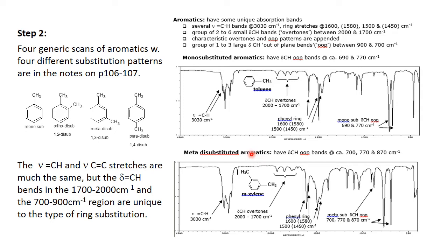You will see several C–H stretches around 3030 wave numbers, appearing as a ragged collection of peaks above 3000. There is more than one because there are four or, in the case of mono-substituted, five hydrogens absorbing, and they won't be at exactly the same location since they have slightly different bond strengths depending on their proximity to the substituents.